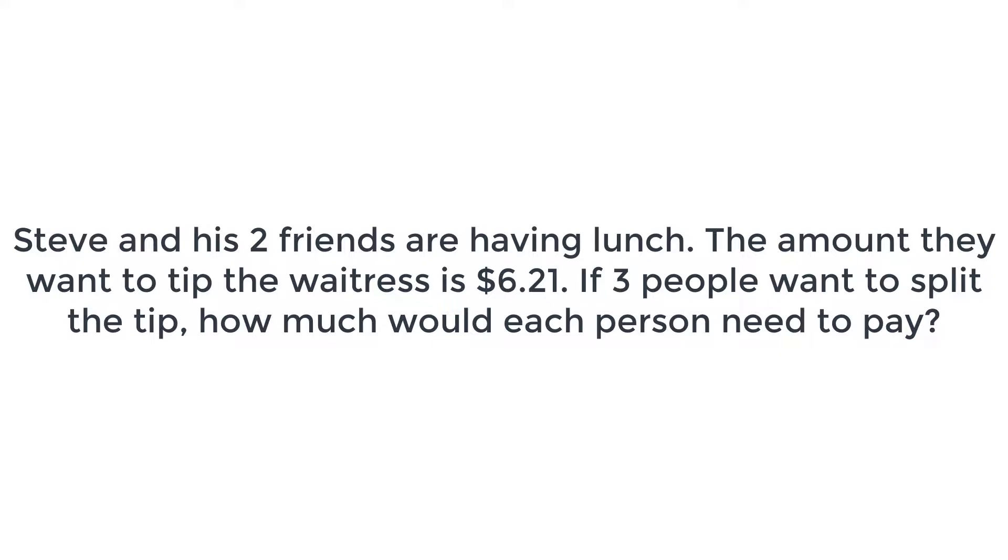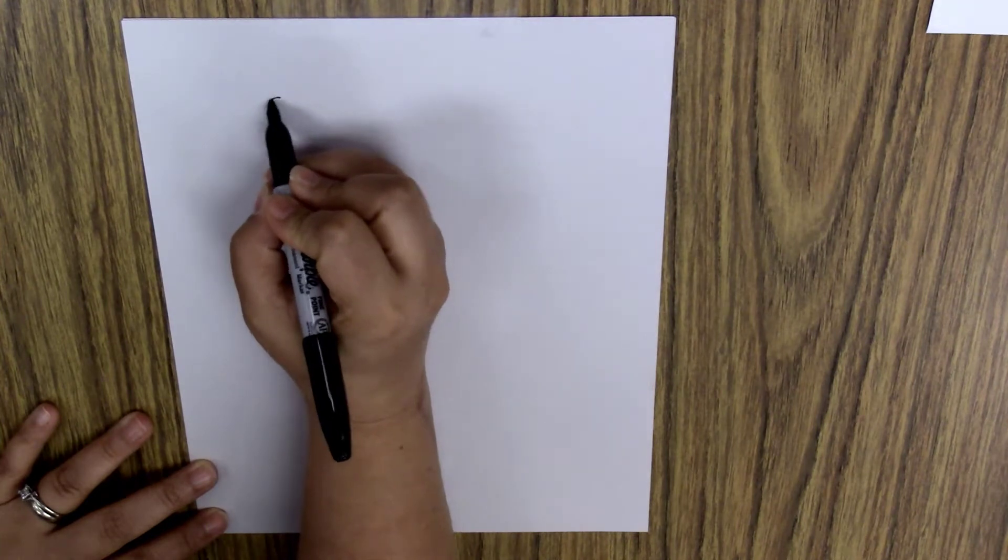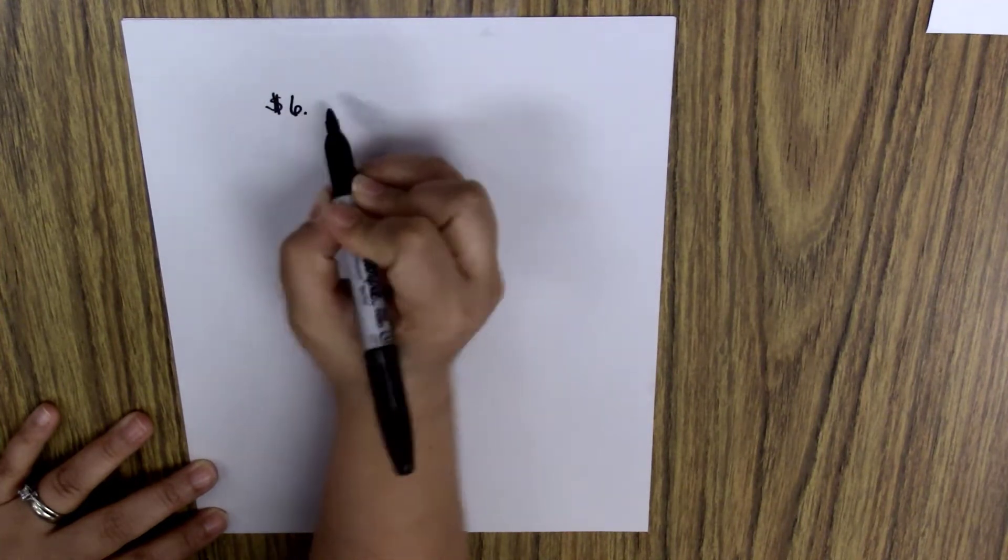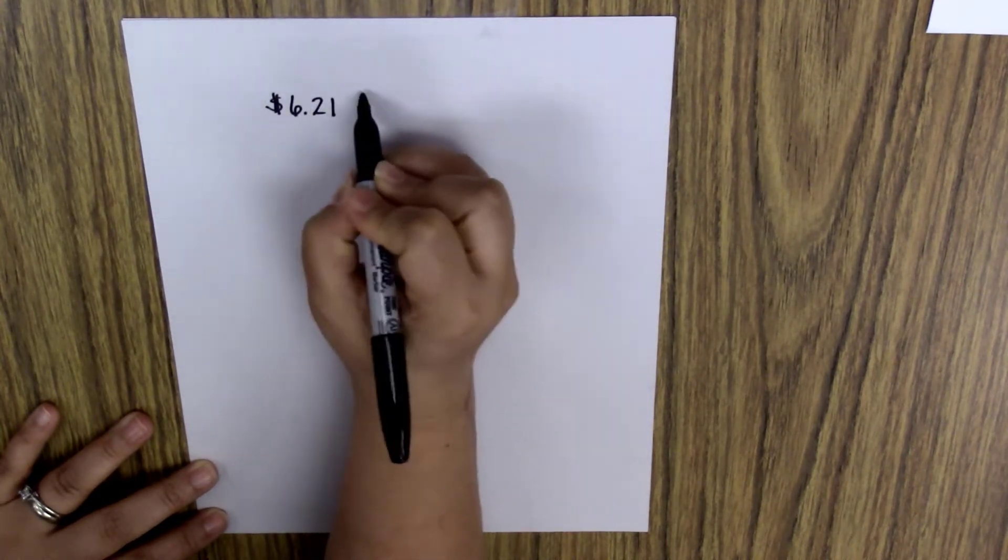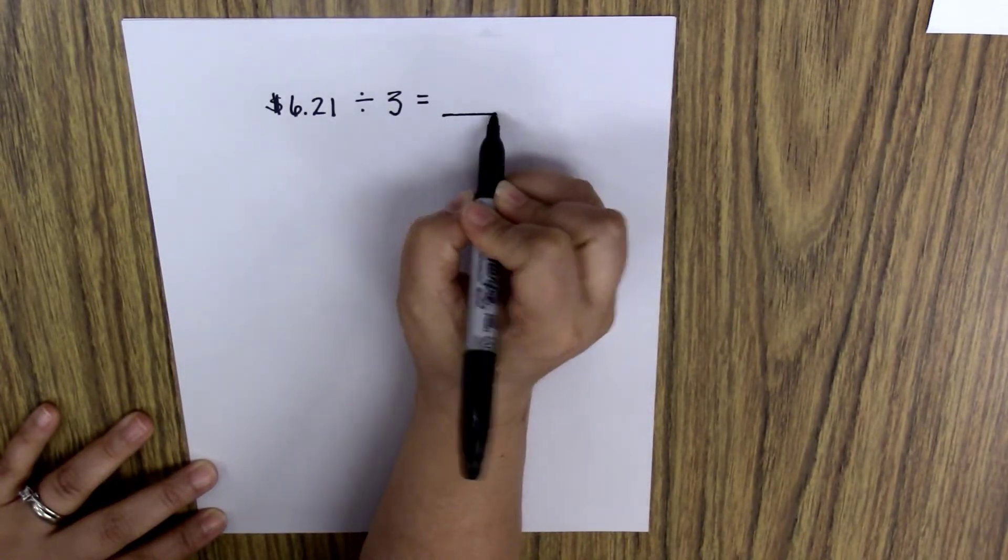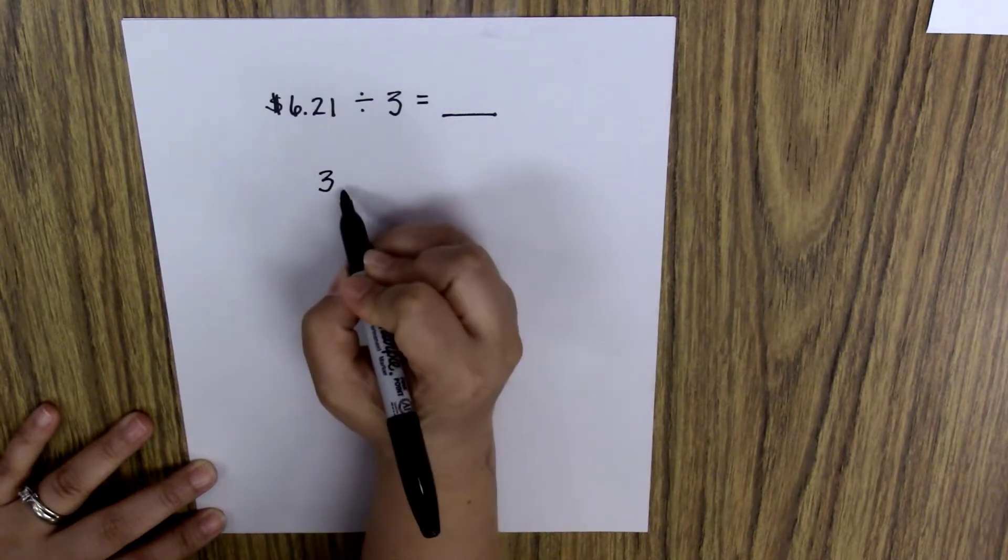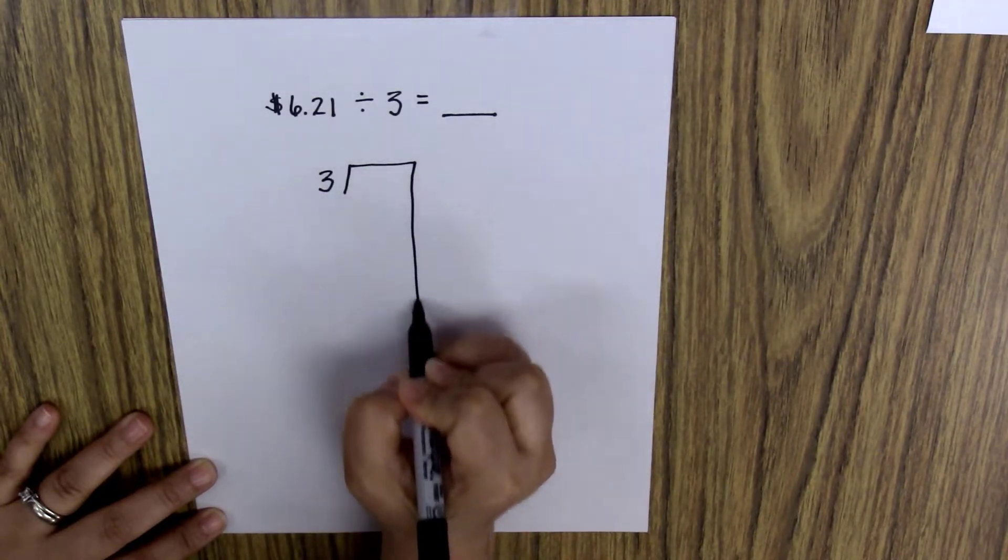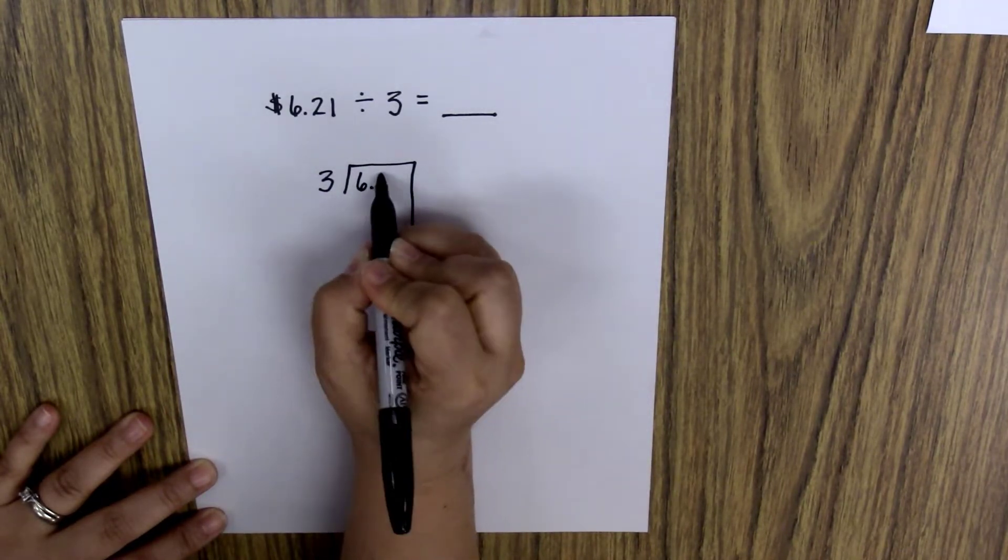I know today I'll be dividing because when I split something, I divide it into groups evenly. So my equation is $6.21 divided by three equals blank. To set up my problem, I will divide three into $6.21.